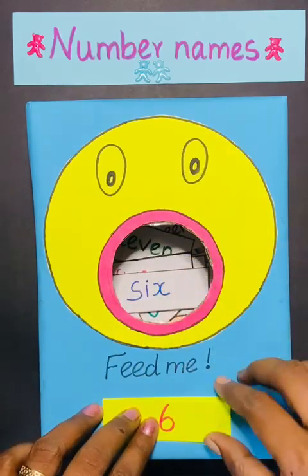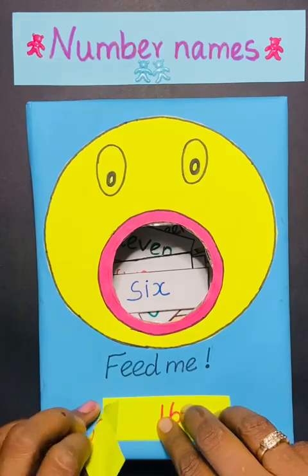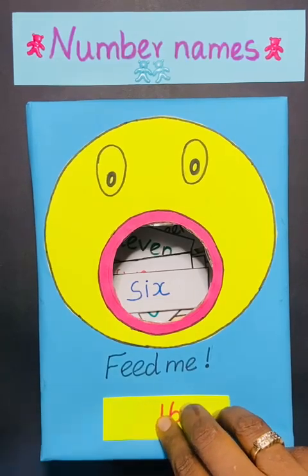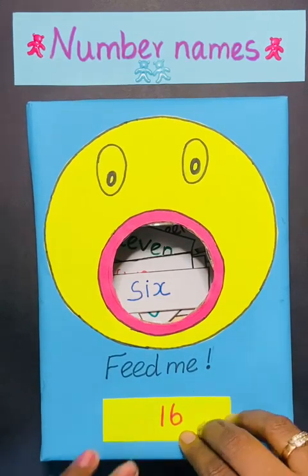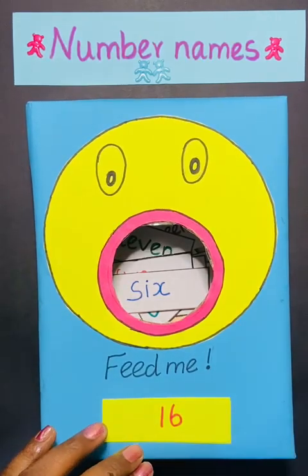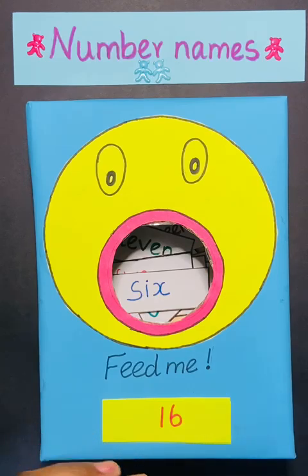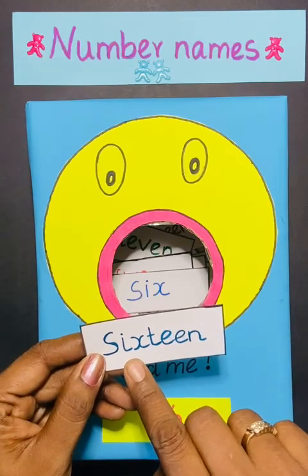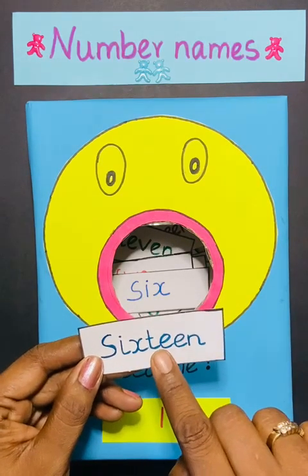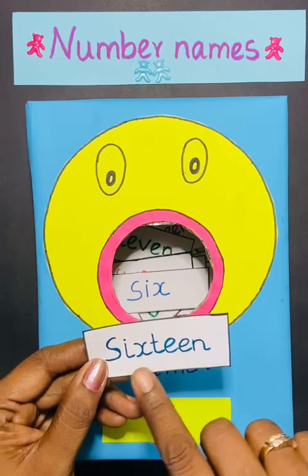Tommy is very hungry. She wants more numbers. 16. S-I-X. 6. Then you have to write T-E-E-N. 16.